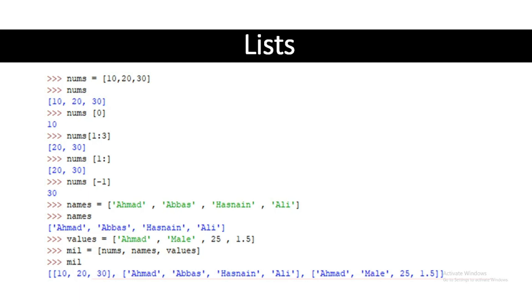For example, a simple list: nums = [10, 20, 30]. If we print nums, it will print 10, 20, 30 — whatever is in the list.